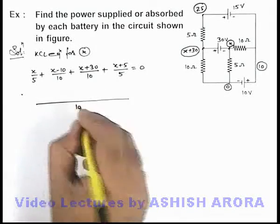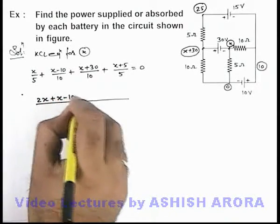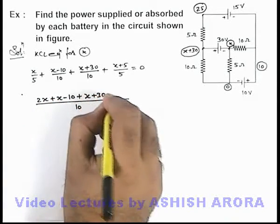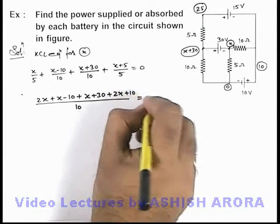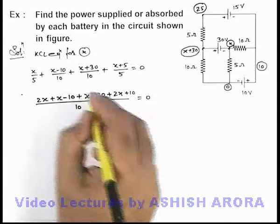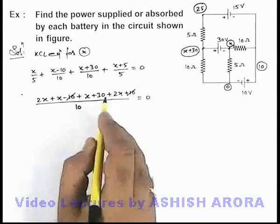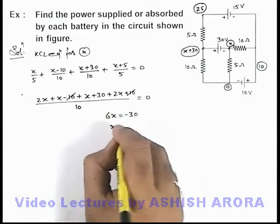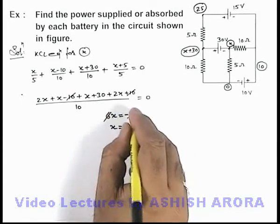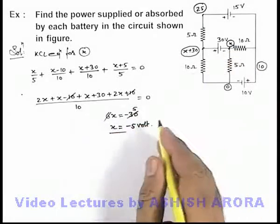Taking the LCM of these terms to be 10, this becomes 2x plus (x minus 10) plus (x plus 30) plus (2x plus 10) equals zero. The 10s cancel out and we get 6x plus 30 equals zero, or 6x equals minus 30. So the value of x is minus 5 volts — the potential x has been obtained.